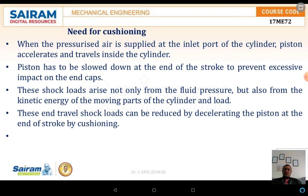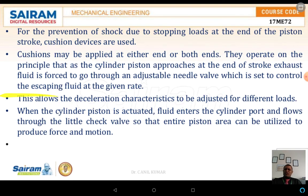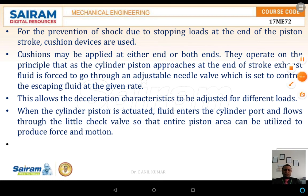Cushion devices are used to prevent shock due to the stoppage of load at the end of the piston stroke. This allows the deceleration characteristics to be adjusted for different loads. When the cylinder piston is actuated, the fluid enters the cylinder port and flows through a check valve so that the entire piston area can be utilized to produce the force of motion. This is why cushioning is needed in both single acting and double acting cylinders.